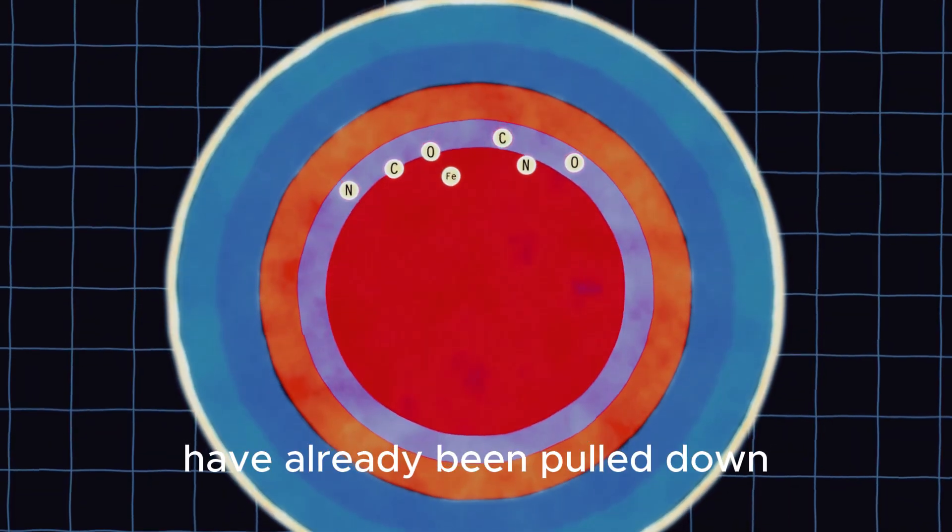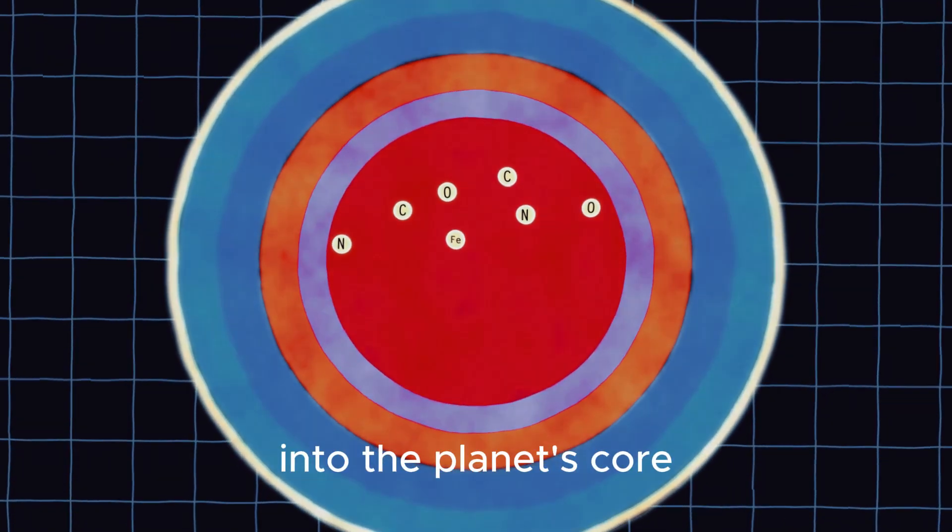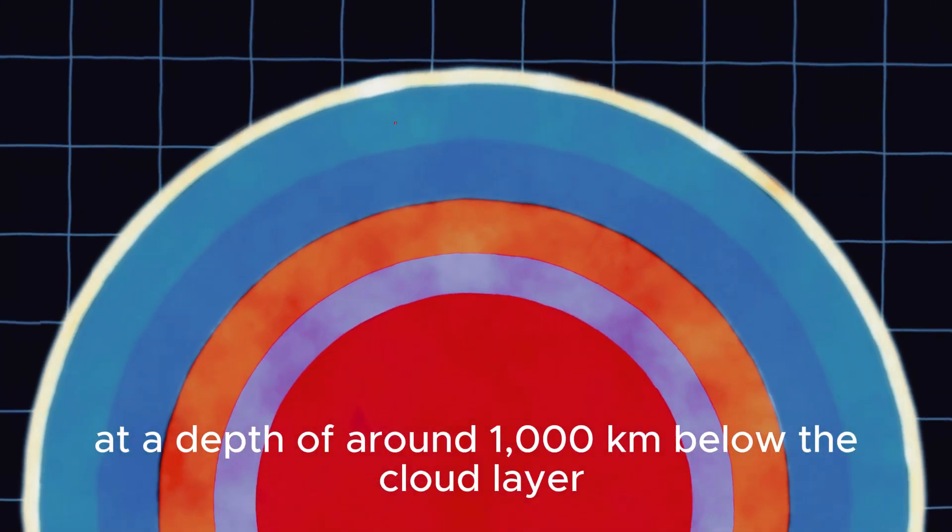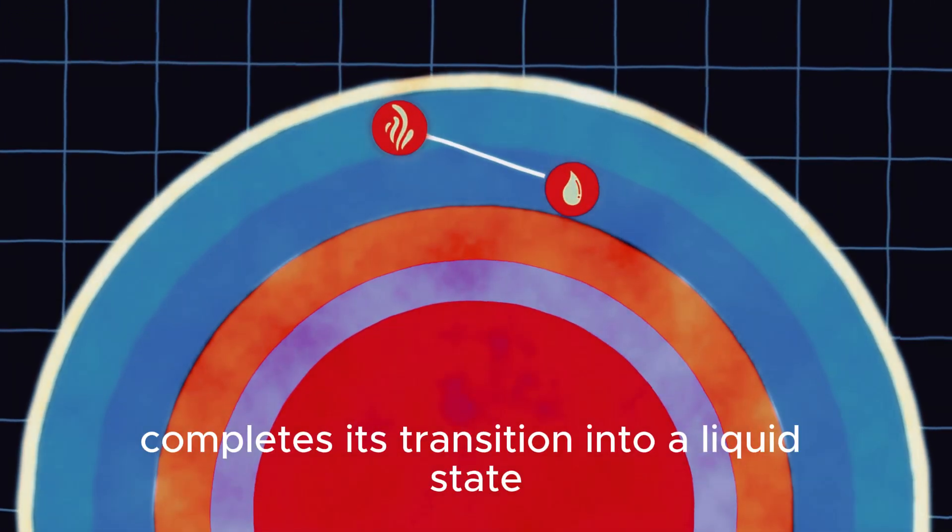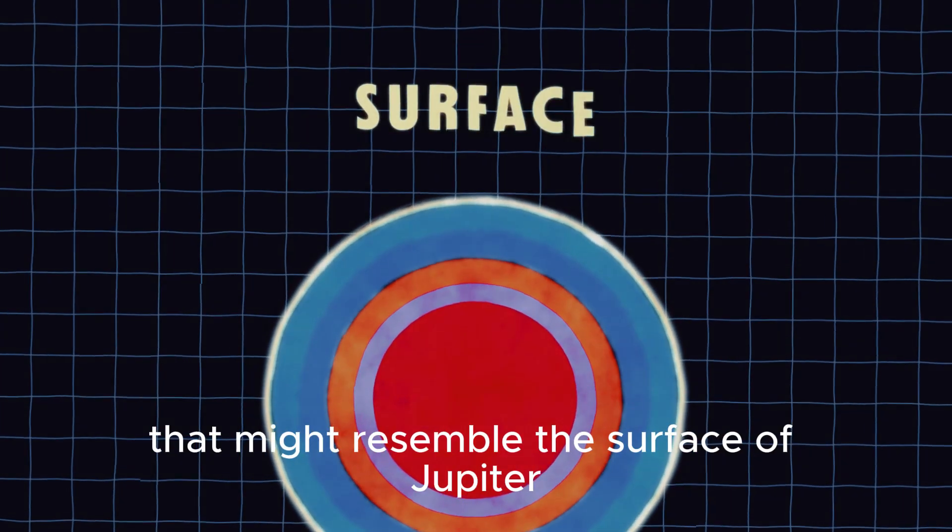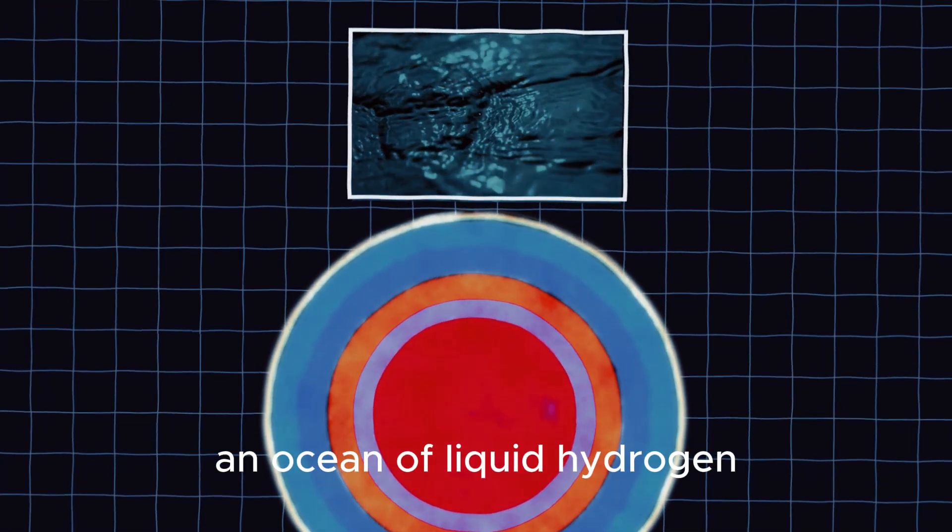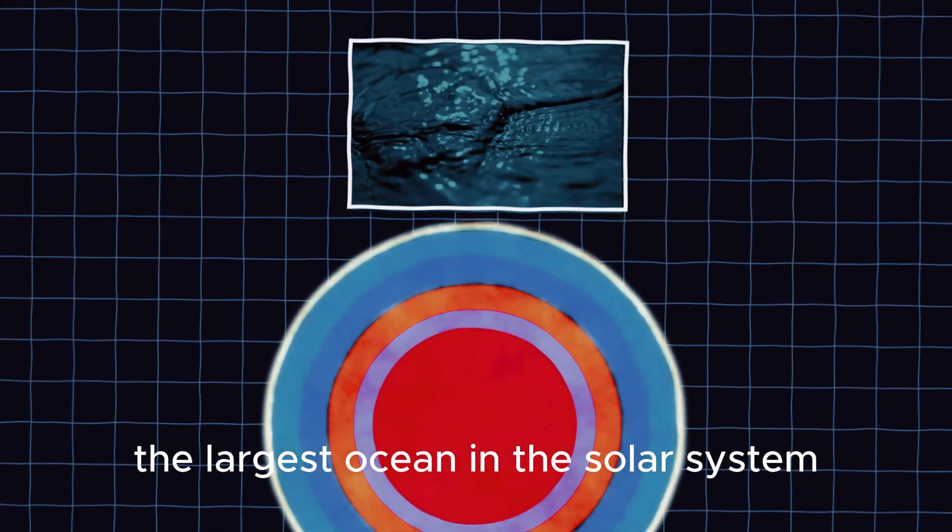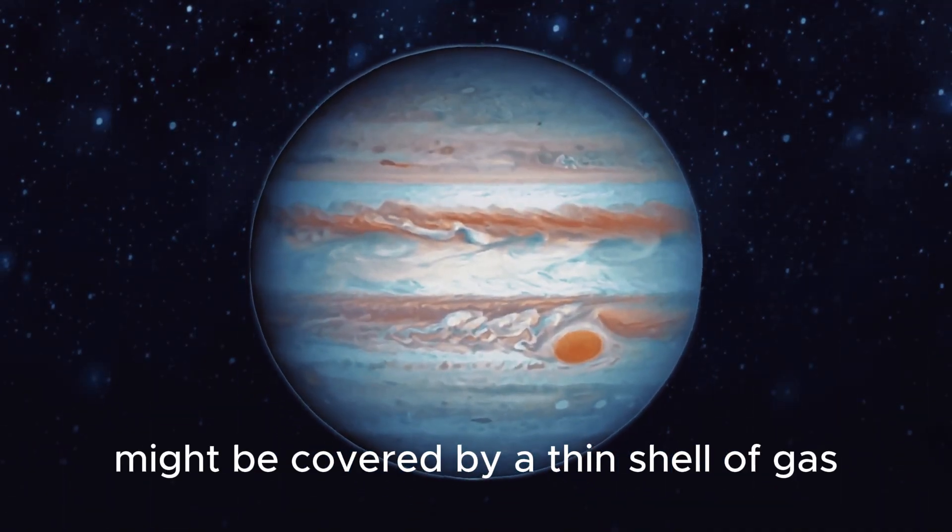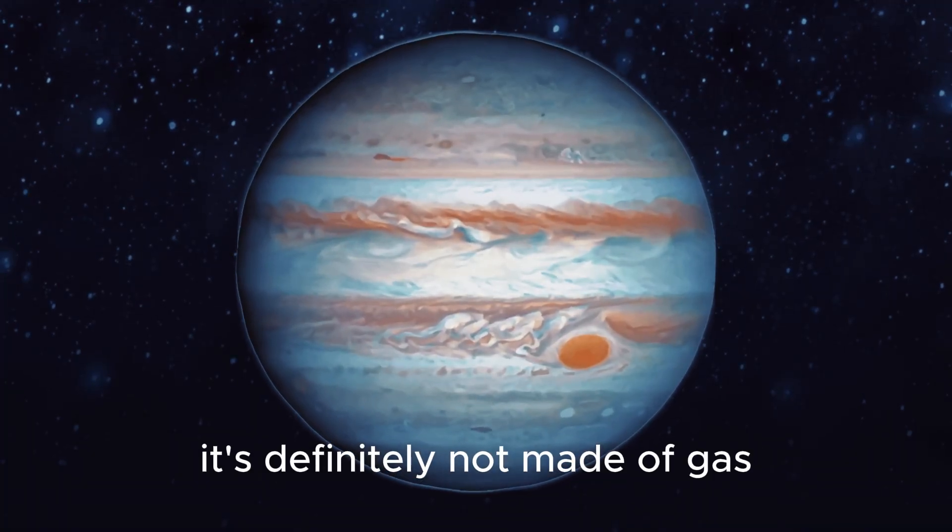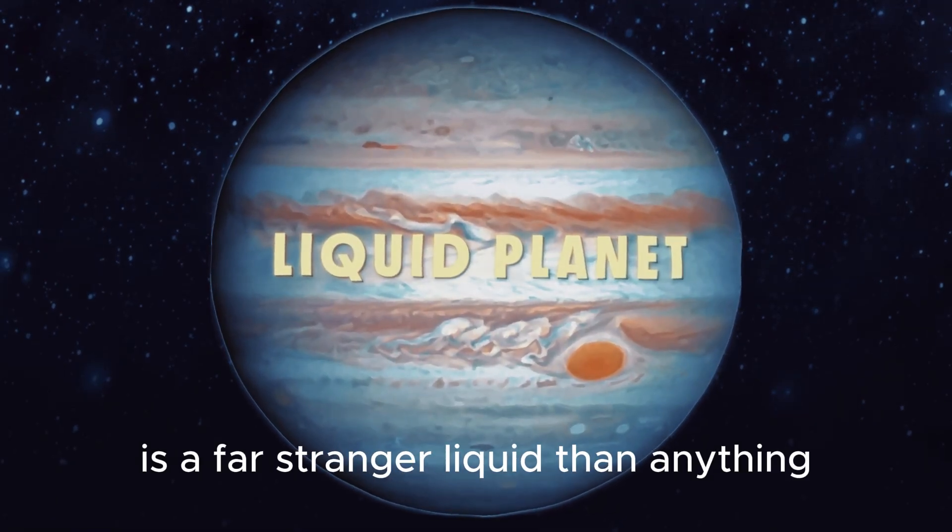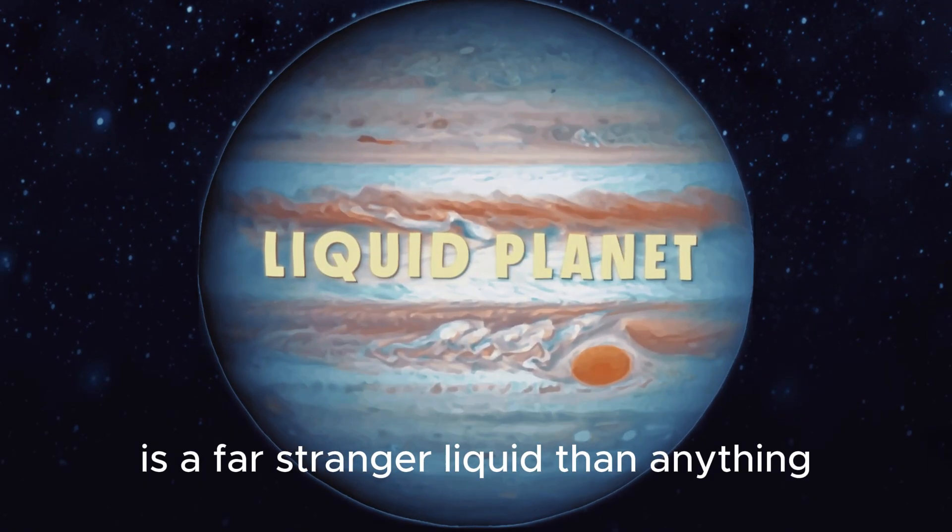Hydrogen is the lightest element in the universe, and in an extreme gravity environment like the inside of Jupiter, it's the only thing that can stay afloat. All of the heavier elements have already been pulled down into the planet's core. At a depth of around 1,000 kilometers below the cloud layer, the hydrogen gas completes its transition into a liquid state, and this is the closest we get to anything that might resemble the surface of Jupiter, an ocean of liquid hydrogen, the largest ocean in the solar system. So while the giant planet might be covered by a thin shell of gas, it's definitely not made of gas. It is a liquid planet, but this is a far stranger liquid than anything we've seen before.